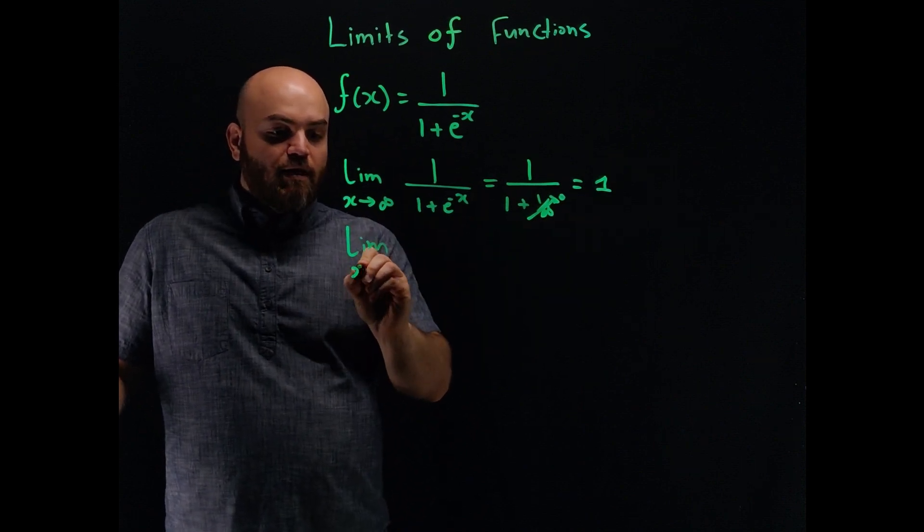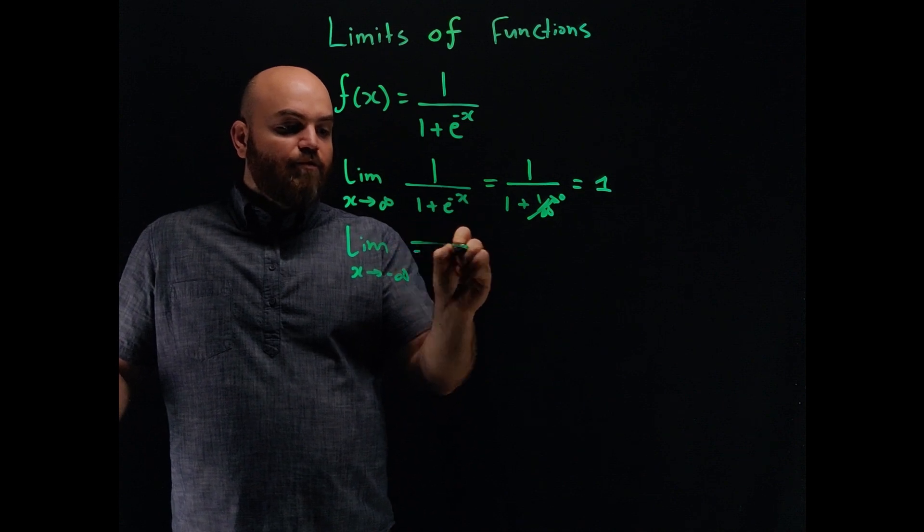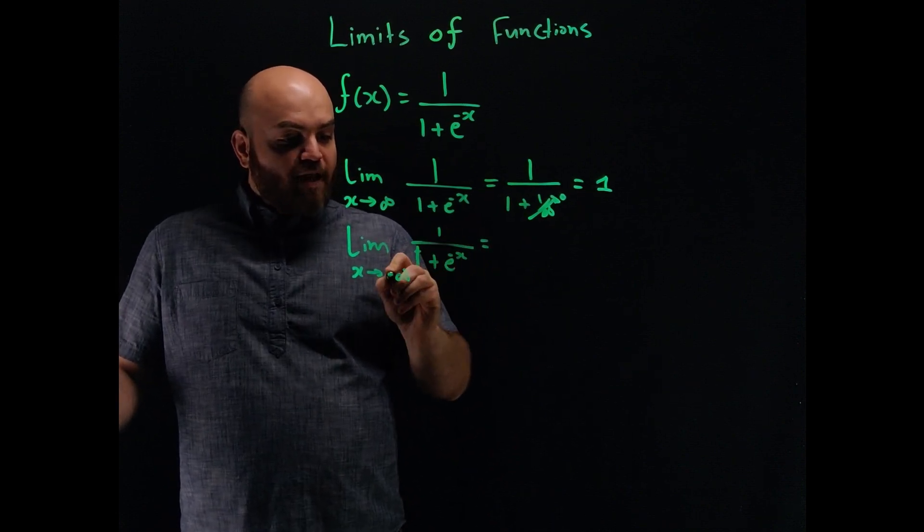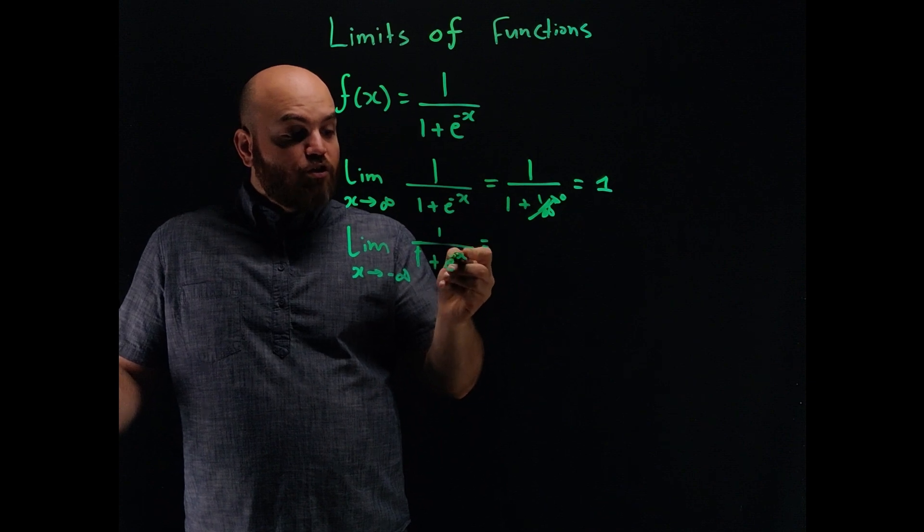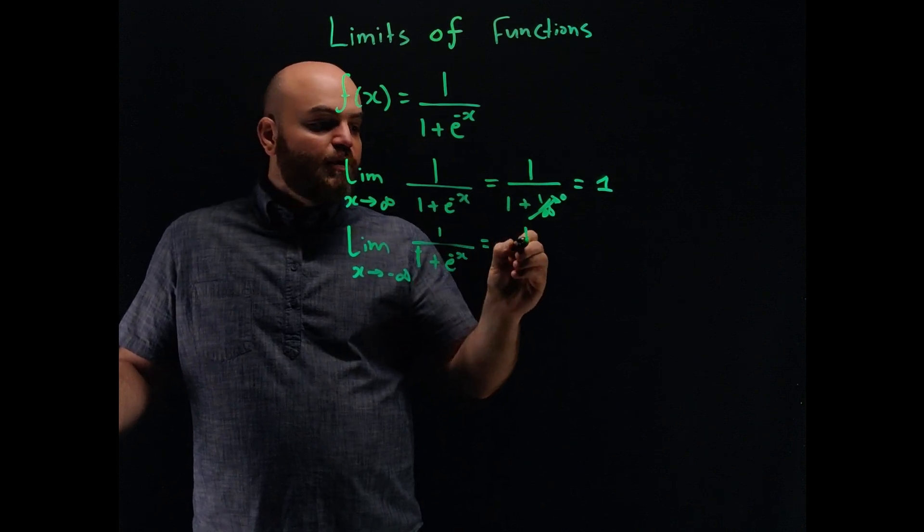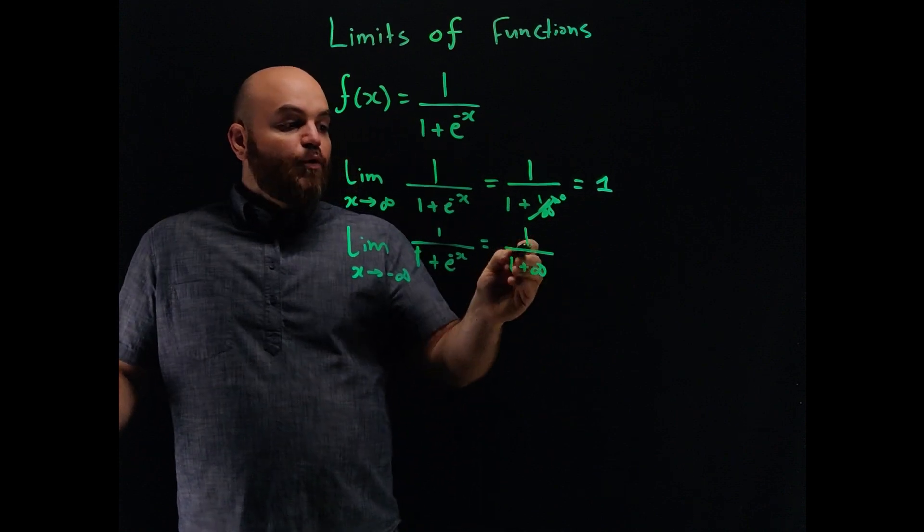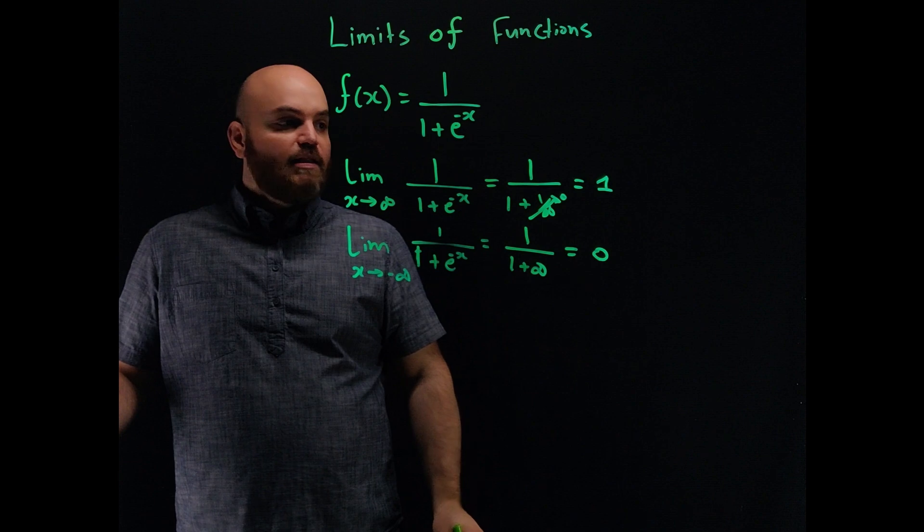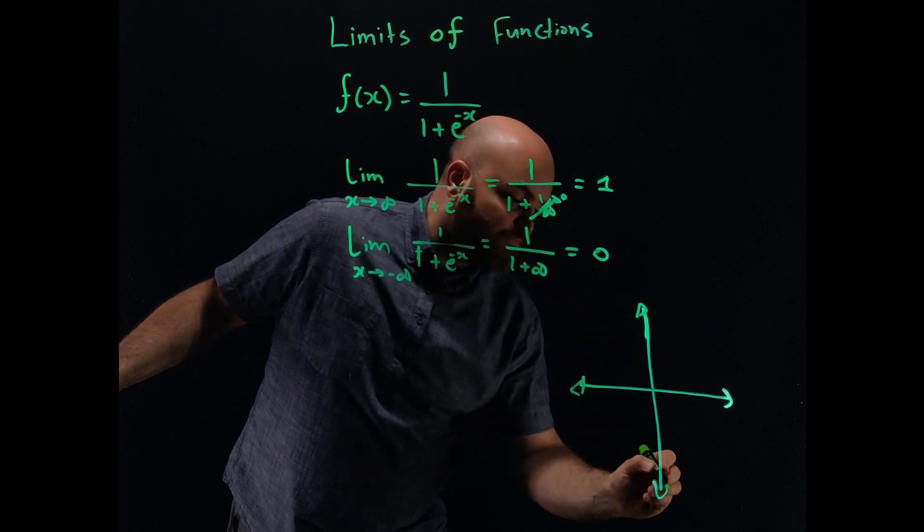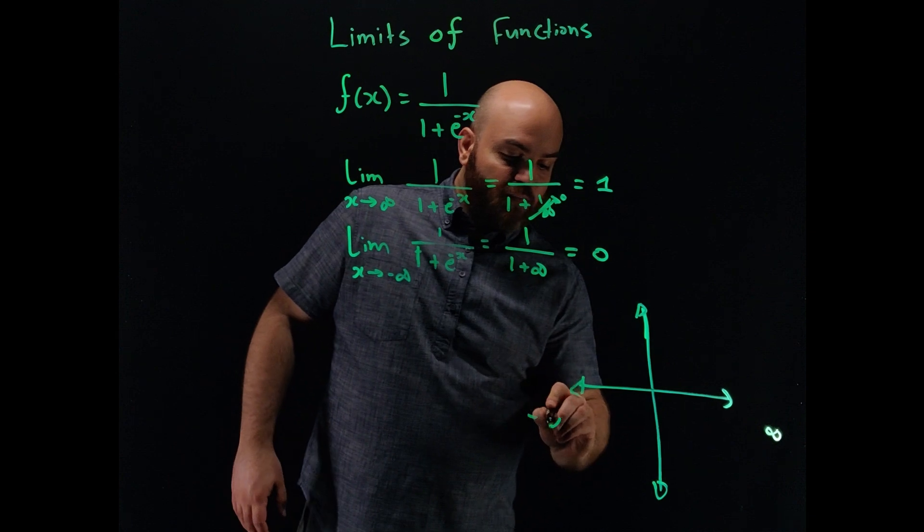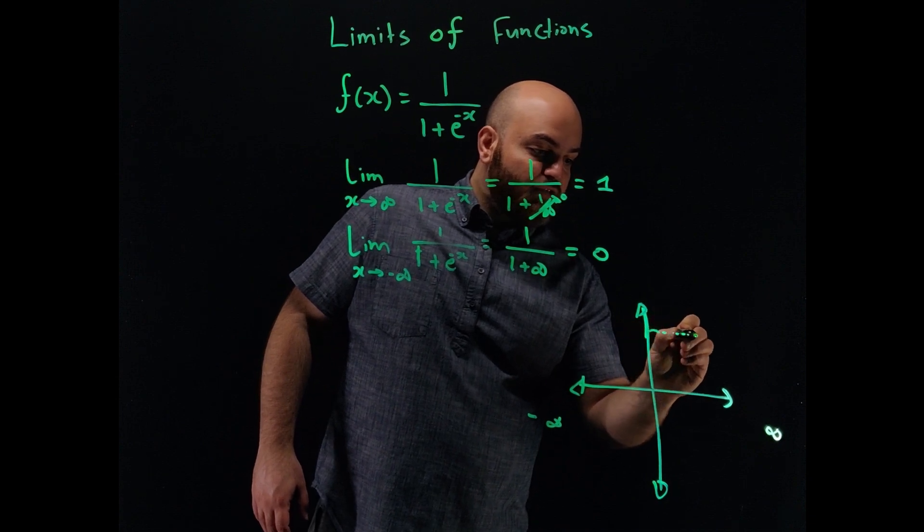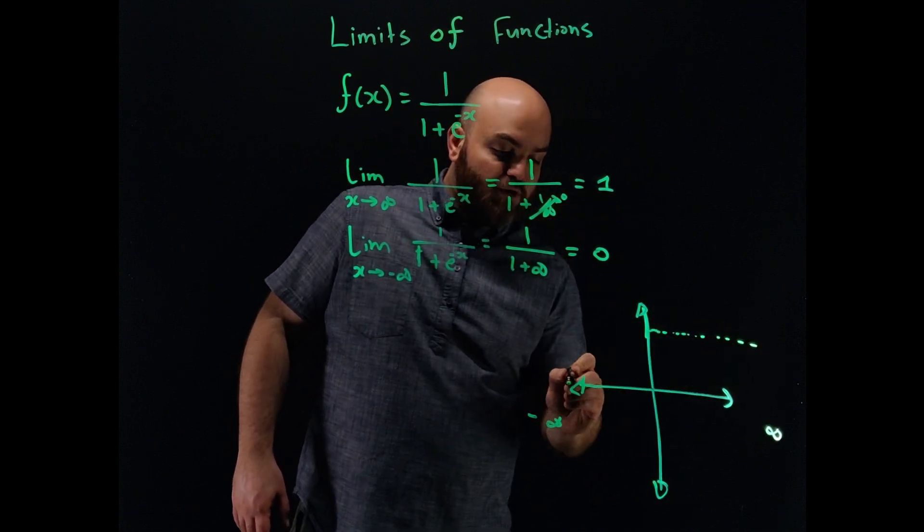How about the limit as x goes to minus infinity? What is that of 1 over 1 plus e to the minus x? Same function. So this term right here, the negative and negative become positive. So this term as x grows in the negative direction will grow larger. So this goes to infinity. So this becomes 1 over 1 plus infinity. And 1 over infinity is 0. It's defined mathematically as 0. So now we know two things. If we were to make a plot of this sigmoid, we know that infinity is somewhere over here, minus infinity is somewhere over here on the x axis. We know that the sigmoid will somehow tend to the value of 1 at infinity and 0 at minus infinity.